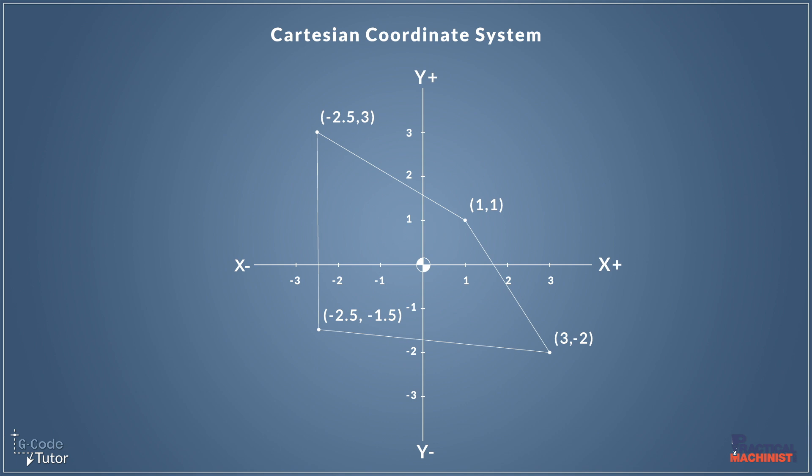When we write that in G-code, it would look like this. Our first point would be X1, Y1. Our second point would be X3, Y minus two. Our third point would be X minus 2.5 and Y minus 1.5 because we've crossed over that datum position in both axes. And our final position at the top here is X minus 2.5, Y plus three, and then back to the start position. That's how we plot our points using the Cartesian coordinate system on a CNC milling machine. On a lathe, we would just swap those axes around. So X would run from top to bottom and Z would run from left to right.